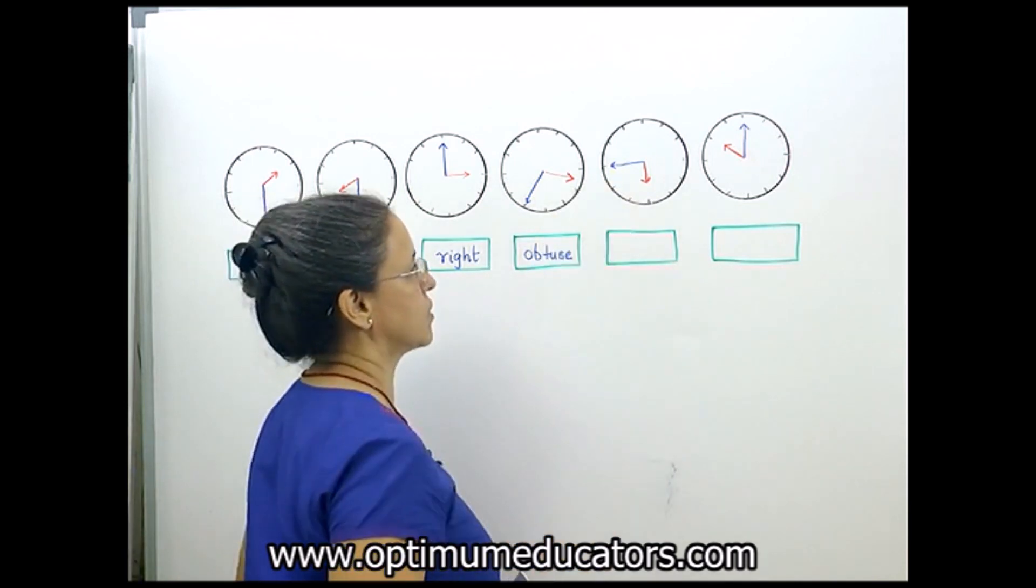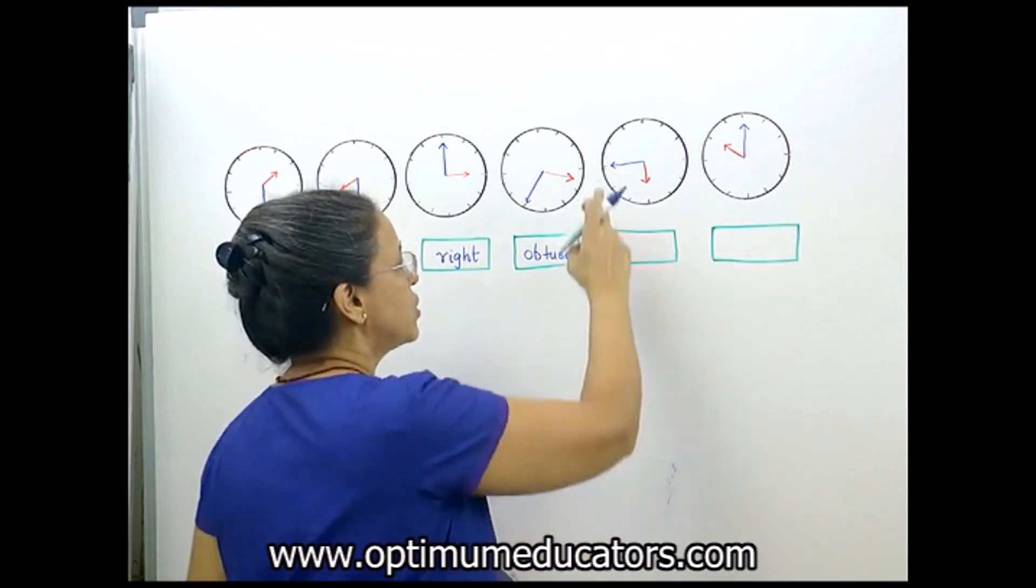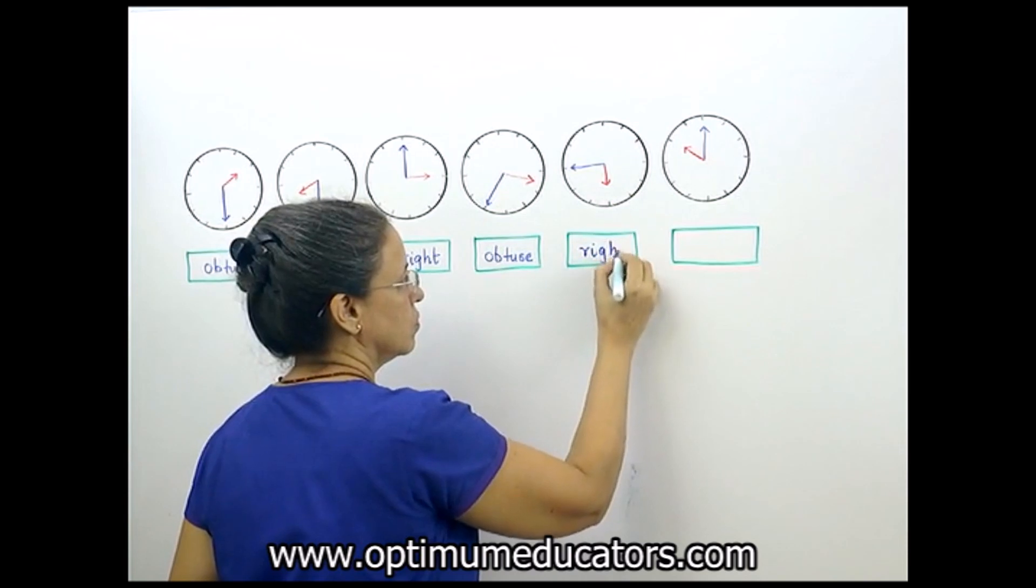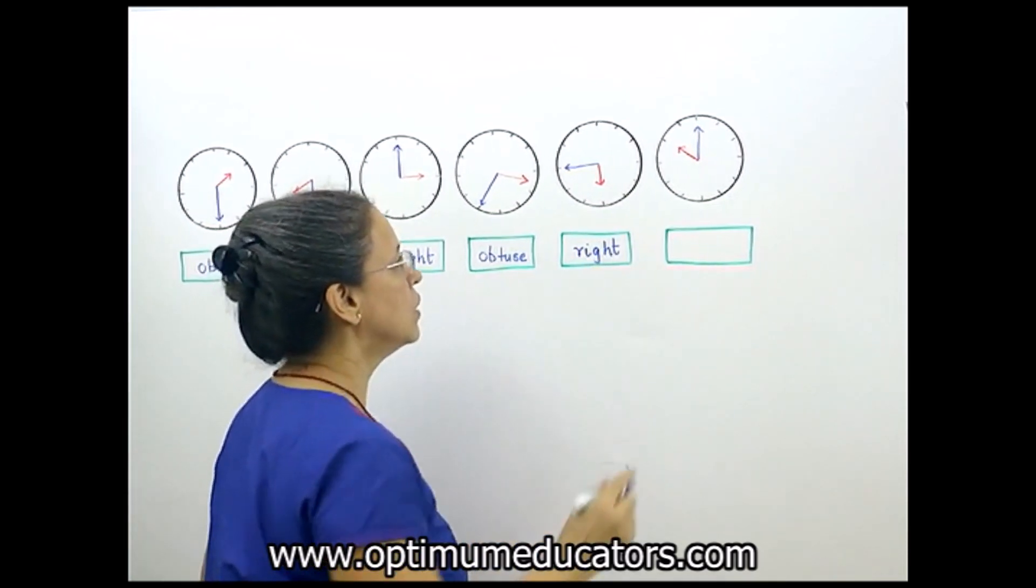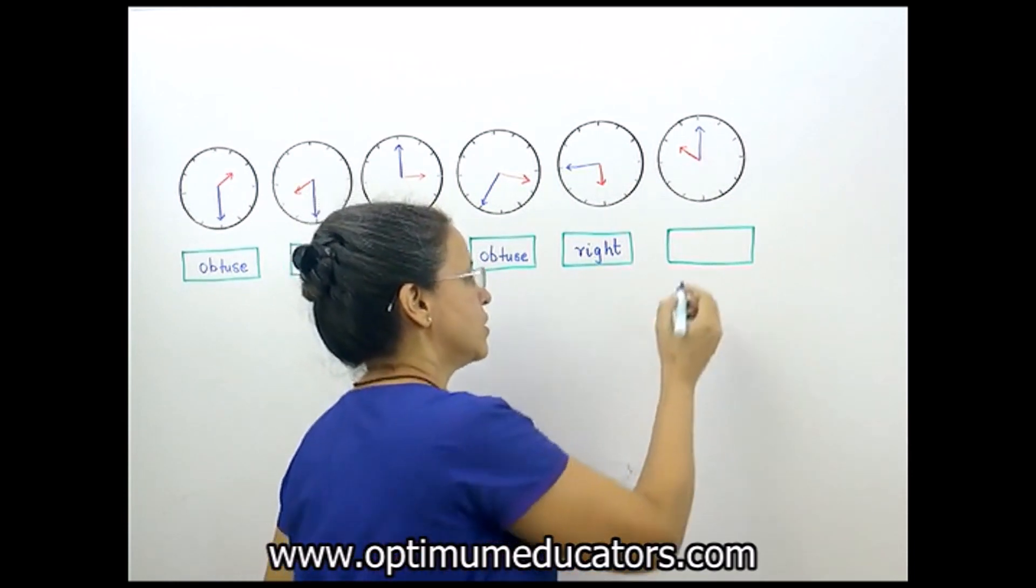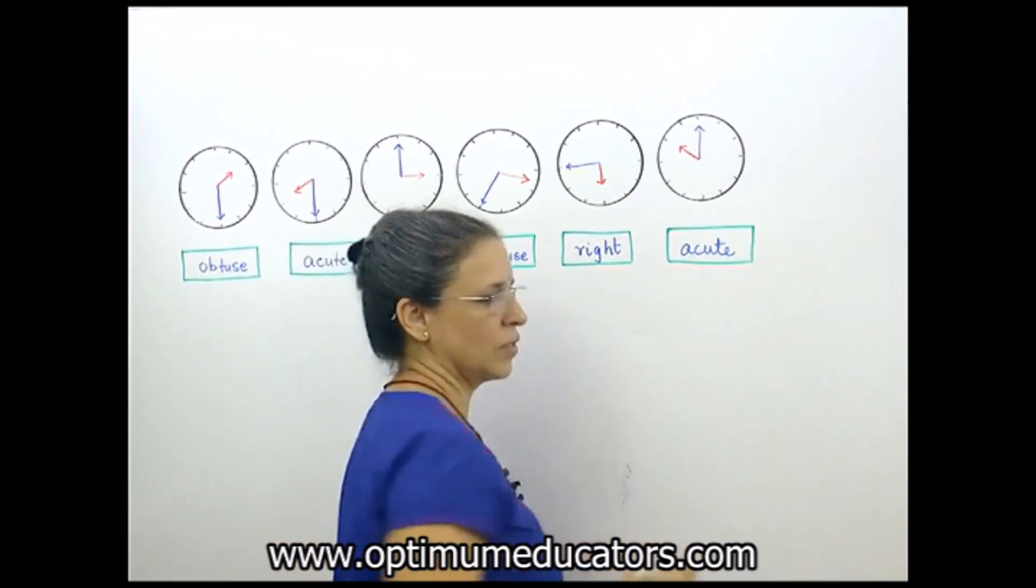This is a quarter to six, or we can also call it 5:45, and this also forms a right angle. Now the last one - here you can see it is 10 o'clock, and this is an acute angle. Have you got that?